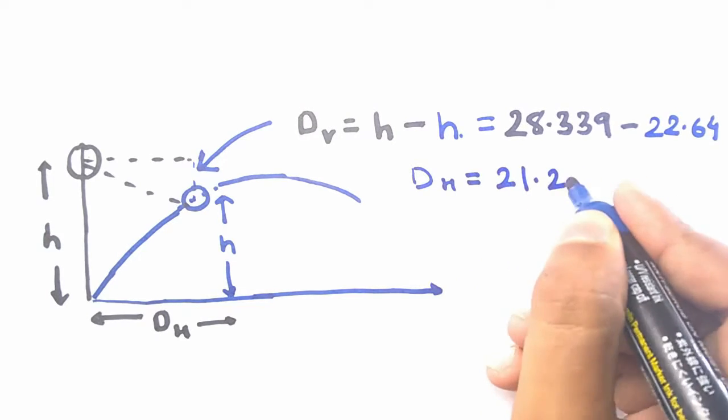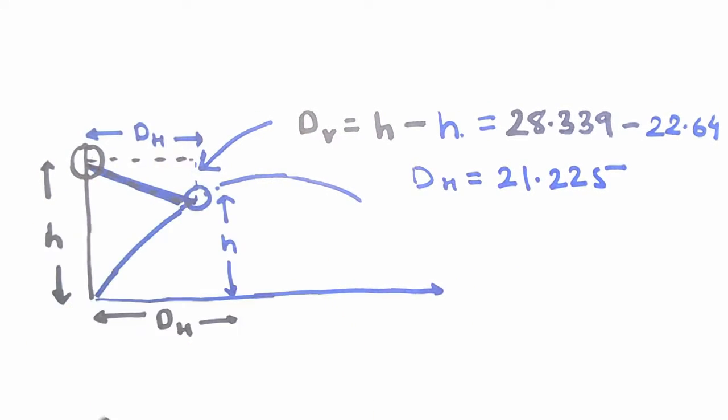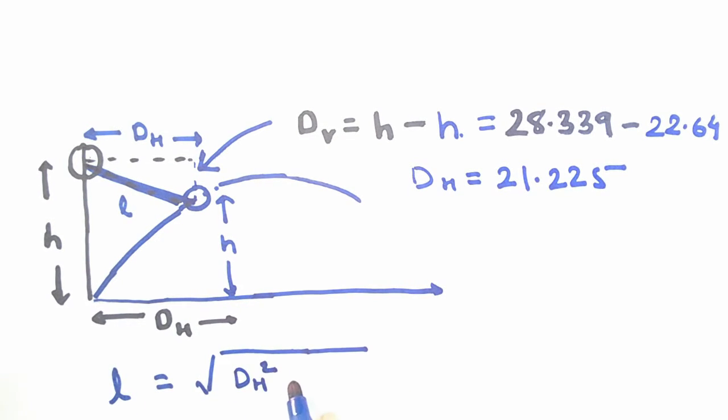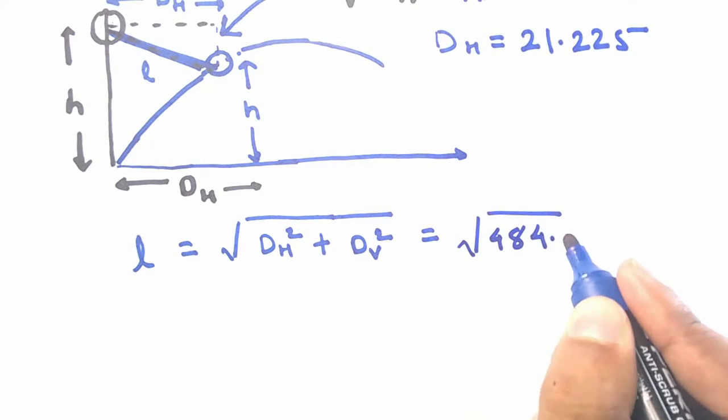And there we go, we again have a right angle triangle and the hypotenuse of this right angle triangle will be the distance between these two balls which can easily be calculated using Pythagoras theorem.